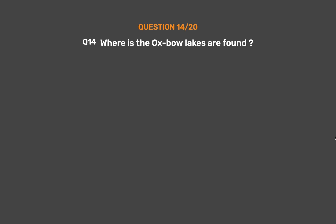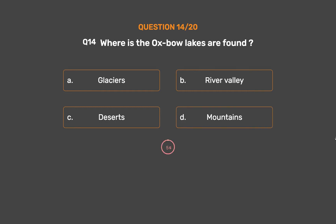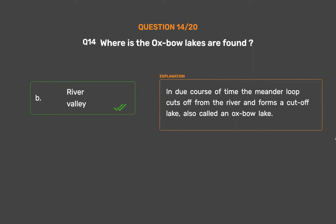Question No. 14: Where are oxbow lakes found? Option A: Glaciers. Option B: River Valley. Option C: Deserts. Option D: Mountains. The correct answer is Option B: River Valley. In due course of time, the meander loop cuts off from the river and forms a cutoff lake, also called an oxbow lake.